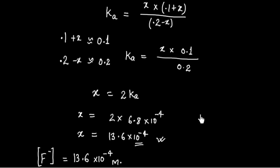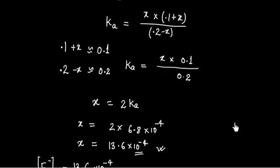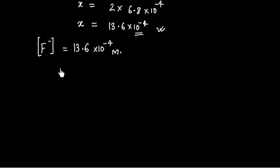It is always good to check the assumptions. X is on the order of 10 to the power minus 4. If we add 0.1 plus 10 to the power minus 4, this is approximately 0.1. And if we subtract 0.2 minus 10 to the power minus 4, this is approximately 0.2. So the assumptions are valid.